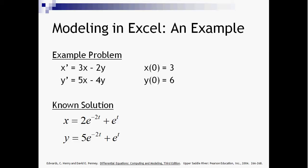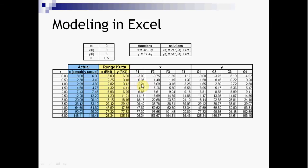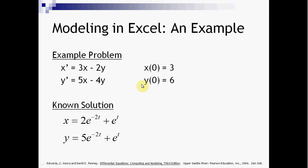We're going to do a problem: x prime equals 3x minus 2y, y prime equals 5x minus 4y, with given initial conditions. There are the known solutions, from that textbook there.